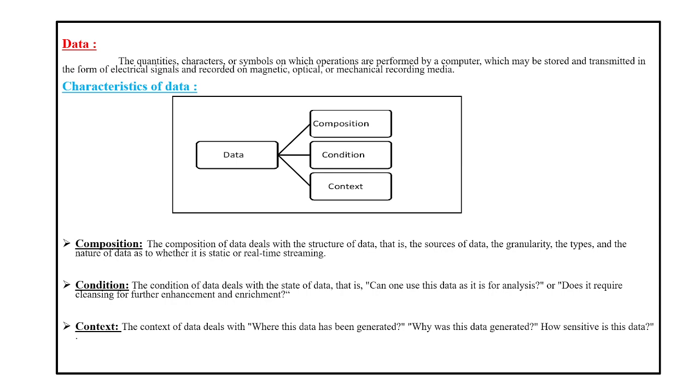So here also, the data is the same thing. It's a collection of figures, facts, and numbers. That means we can say them as quantities, characters, or symbols. These are the raw data and this data is taken as an input to the computers, and within the computer you are going to perform the process. The data is given to the computer in order to do the processing.